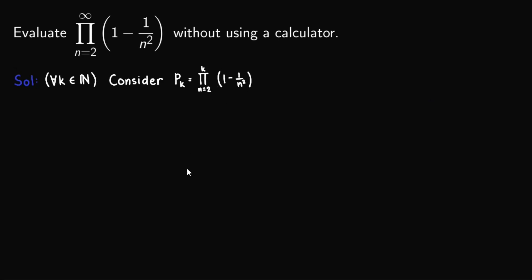If we expand this one, this is equal to 1 minus 1 over 2 squared for n equals 2, 1 minus 1 over 3 squared for n equals 3. For this one, this is n equals 4 and so on until n equals k. So we'll have this.